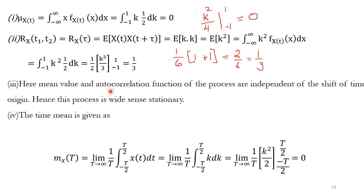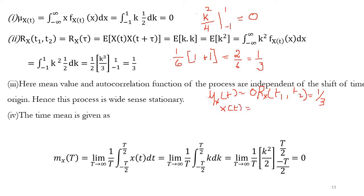We observe that the mean value μ_x(t) = 0 and the autocorrelation R_x(t₁,t₂) = 1/3, a constant independent of time. Hence this process is wide-sense stationary. Since x(t) = k and x(t+τ) = k, we have x(t) = x(t+τ), confirming WSS.